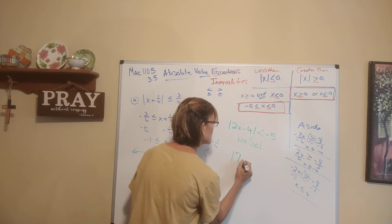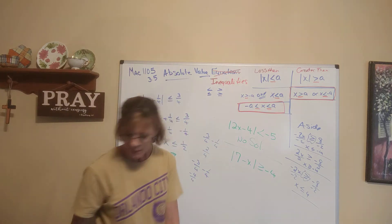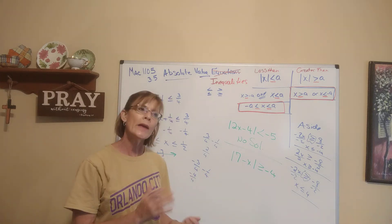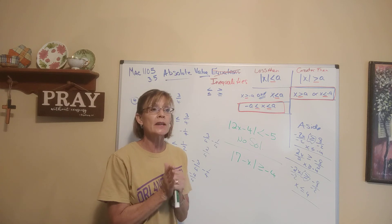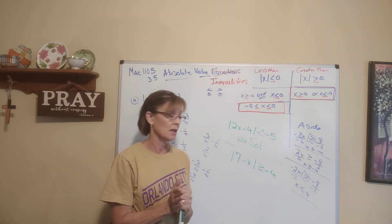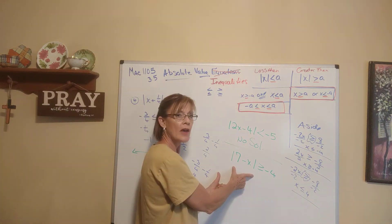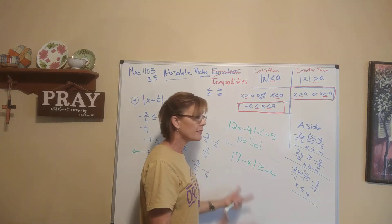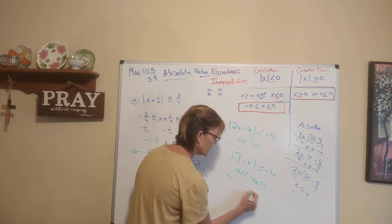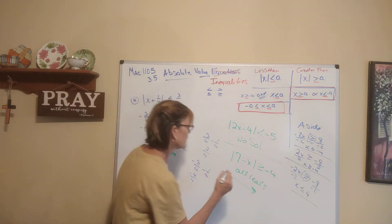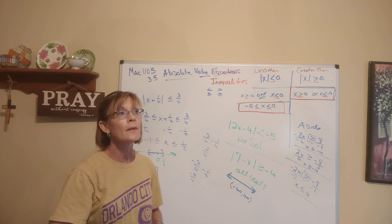Here's another example. What if they say: the absolute value of 7 minus x is greater than or equal to negative 4? Well, an absolute value is a distance. When is a distance greater than or equal to negative 4? The smallest a distance can ever be is 0, and it can never be negative 4. So the absolute value is bigger than negative 4 all the time — no matter what you put in for x. The answer is all reals. The entire number line would be shaded, and the interval notation would be negative infinity to positive infinity.